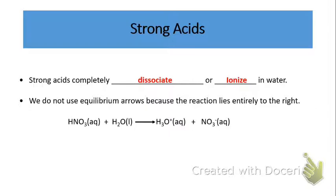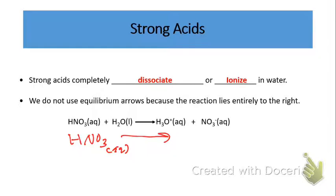We can simplify this reaction to better explain ionization and dissociation. Since we know that water is the base, and in most cases when dealing with strong acids water will be the base, we don't need to include it in our equation. So if you know that water is the base, all you need to write is the strong acid — HNO3 aqueous. If the base is not water, then we write it into the chemical reaction; otherwise, leave it out and simplify.